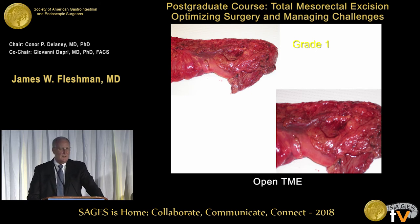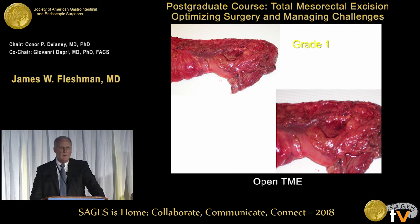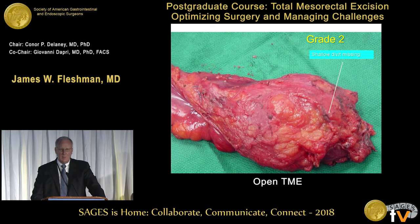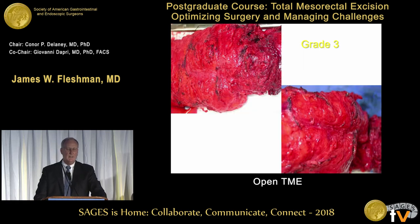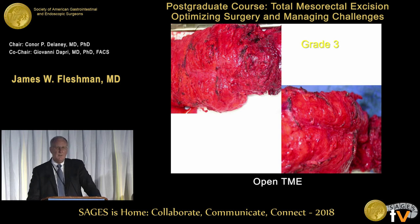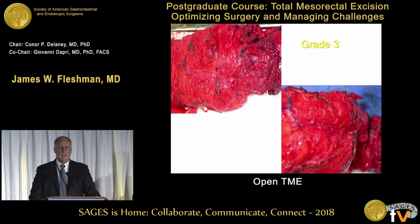Our grade one in the United States is not as bad-looking as the grade one in the UK. If you have any muscle appearing through the mesorectal fat, that is an incomplete TME. If you have a small divot, it's only a near-complete TME, and if it's a smooth surface, it's a complete TME. Studies have shown that near-complete and complete TME have the same oncologic outcomes, and cutting into the mesorectal envelope may have a very small impact but not enough to be detected statistically.